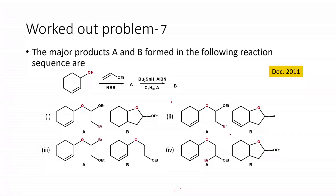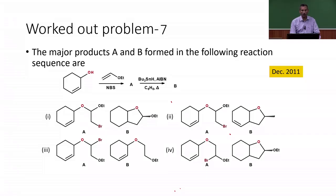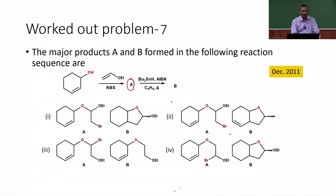Let us move on to the next problem. Here the major products A and B formed in the following reaction sequence are asked. We have cyclohexene as a starting material. Ethyl vinyl ether in the presence of NBS is used in the first step, giving intermediate A, which further undergoes reaction with tributyltin hydride and AIBN in benzene with heating to give product B. We have to identify what product A and product B are.